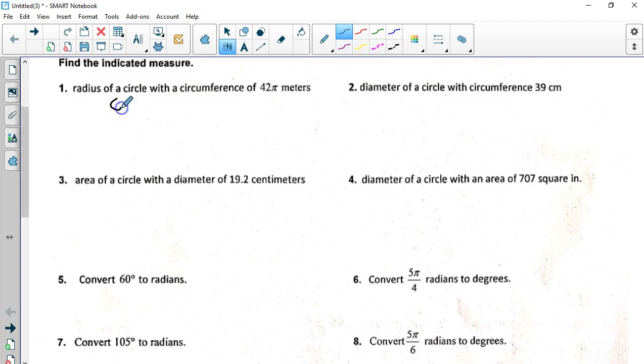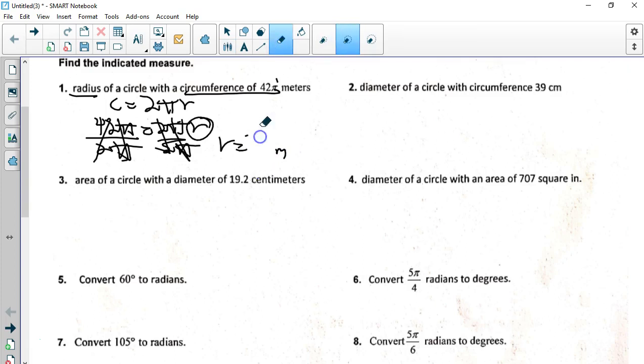Find the radius with a circumference of 42 pi. Remember, it's a good idea to start off with the formula. Since it says radius, we're going to use the 2 pi r formula. Now, we know the circumference over here, 42 pi equals 2 pi r. To get r by itself, which we're trying to solve for, we're going to divide by 2 pi. Pi cancels, 2 cancels. 42 divided by 2 is 21 meters.